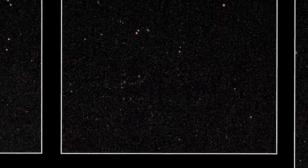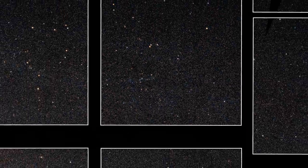WFIRST will have the same image resolution as Hubble, but will cover an area 100 times larger. WFIRST will also view the sky in carefully selected wavelengths of infrared light, which will allow it to see through obscuring dust to reveal hidden stars and watch the growth of galaxies over the last 10 billion years.